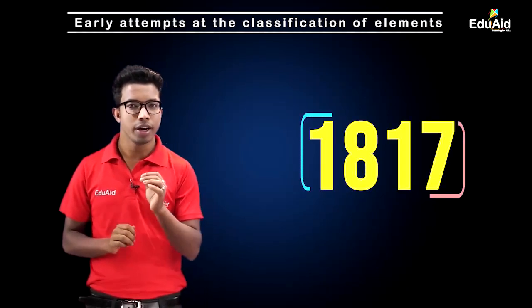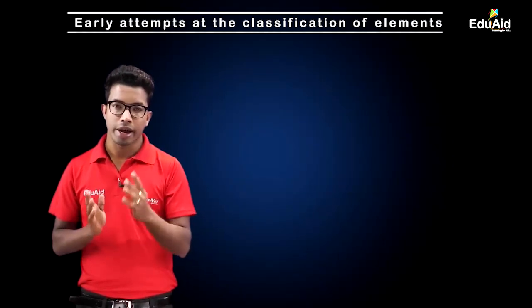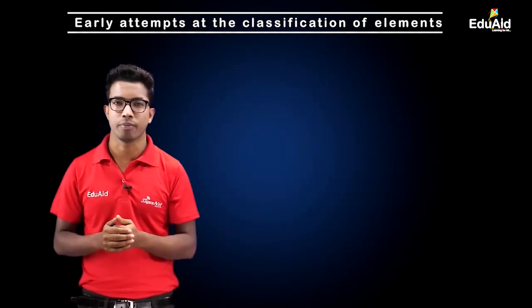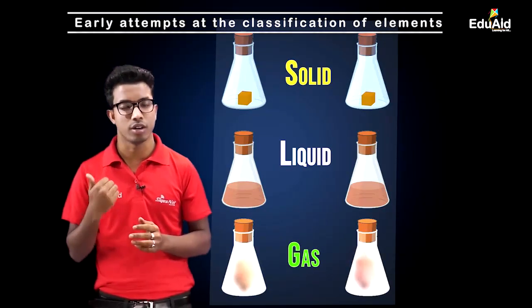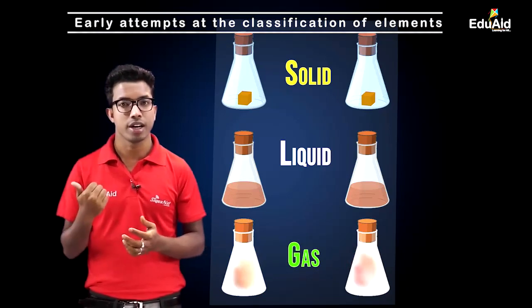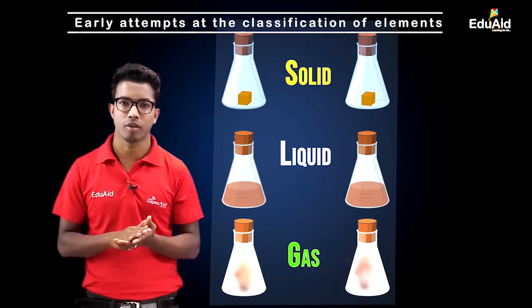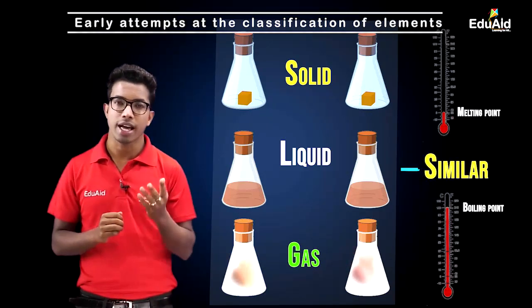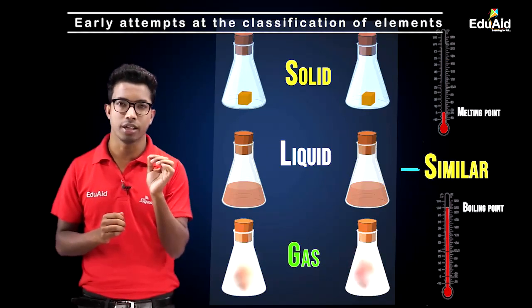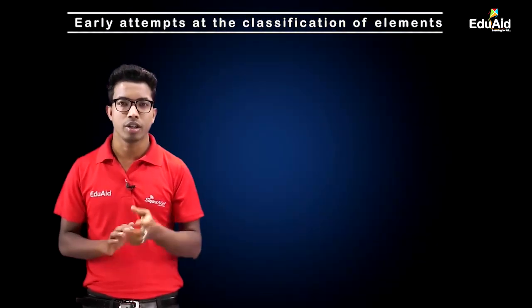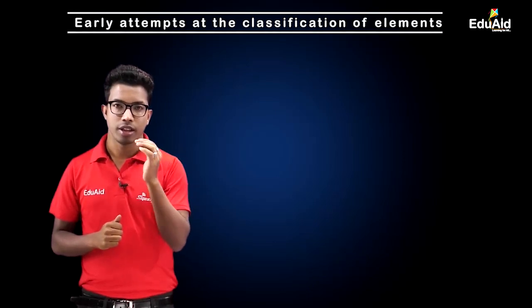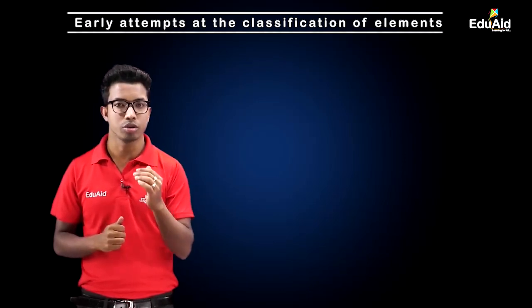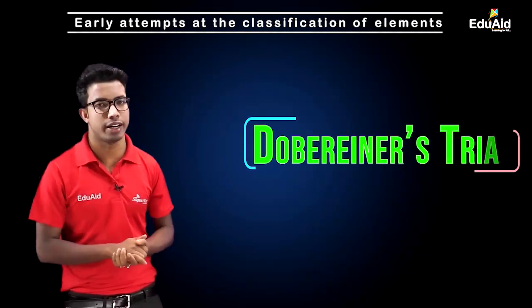In 1817, Döbereiner tried to group elements having similar properties — by similar properties meaning those elements which are different atoms but have similarity in state, similar boiling points, and similar melting points. He found that there are certain groups having three elements each, and he named those groups of three elements as Döbereiner's Triads.